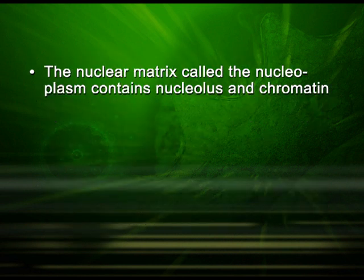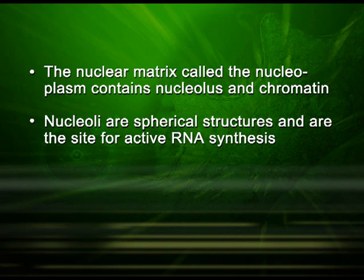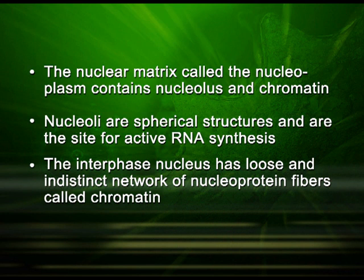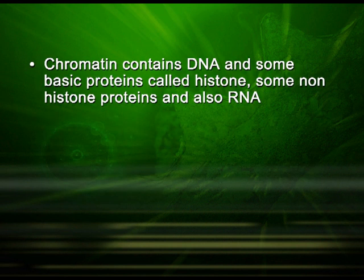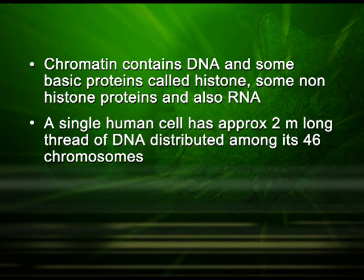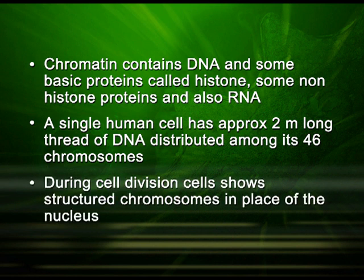The nuclear matrix, called the nucleoplasm, contains the nucleolus and chromatin. The nucleoli are spherical structures and are the site for active ribosomal RNA (rRNA) synthesis. The interphase nucleus has a loose and indistinct network of nucleoprotein fibers called chromatin, which contains DNA, basic proteins called histones, some non-histone proteins, and RNA. A single human cell has approximately a 2-meter-long thread of DNA distributed amongst its 46 chromosomes. During cell division, cells show structured chromosomes in place of the chromatin.